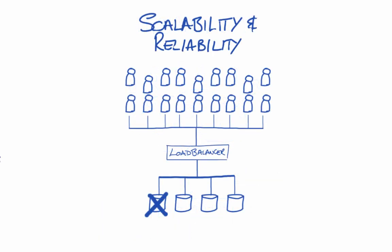Another area of difference is around scalability and reliability. With an Alfresco One Enterprise subscription, companies can choose to deploy Alfresco to multiple nodes or multiple CPUs in a cluster. This allows Alfresco to scale to support many hundreds, thousands, or tens of thousands of users.